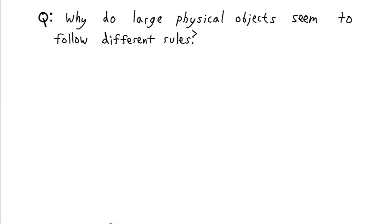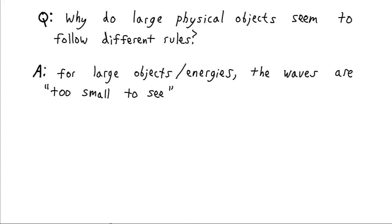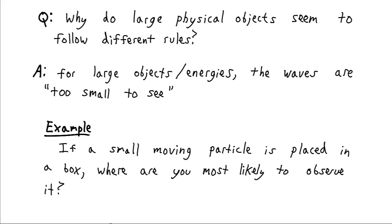Let's broaden our question a little bit. Why in general do these large physical objects seem to follow different rules than these small quantum objects? Well for these large objects or things with large energies, the waves that we get are kind of too small to see, too small to have a distinct effect.